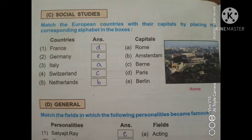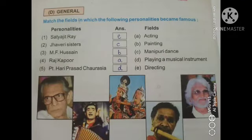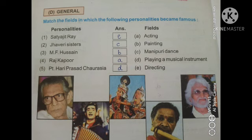Now let us go to our next section, that is D, GK section. Match the fields in which the following personalities became famous. Names are given on one side and fields on the other. In your workbook, page number 18, the pictures are also given. First is Satyajit Ray — answer E, Directing. Second is Javeri Sisters — answer C, Manipuri Dance. Third is M. F. Hussain — answer B, Painting. Fourth one, Raj Kapoor — answer A, Acting. Fifth one, Pandit Hari Prasad Chaurasia — answer D, Playing a Musical Instrument.